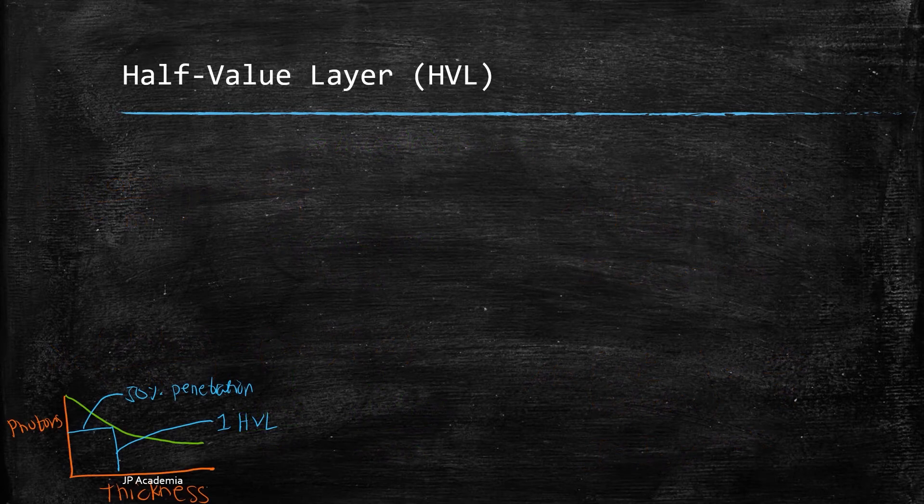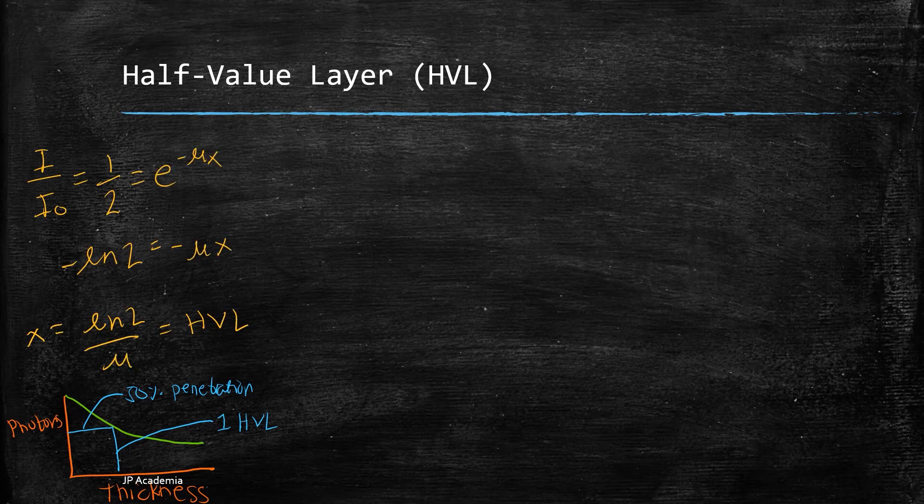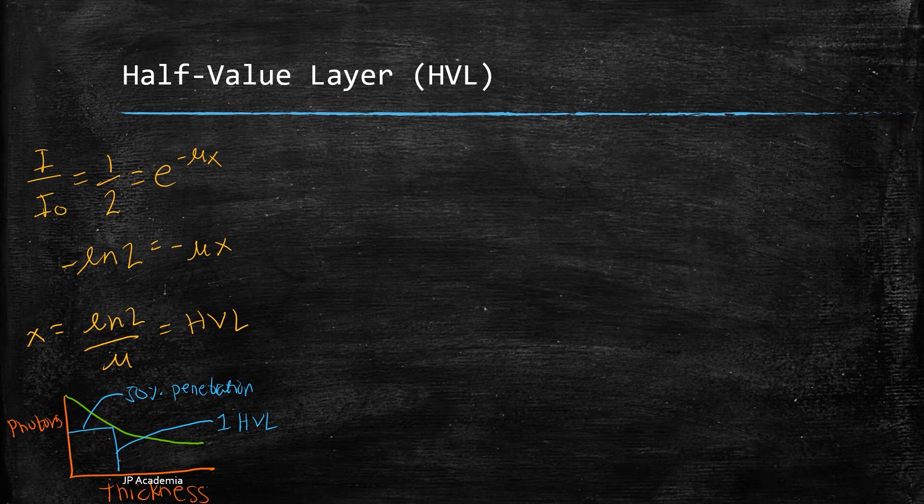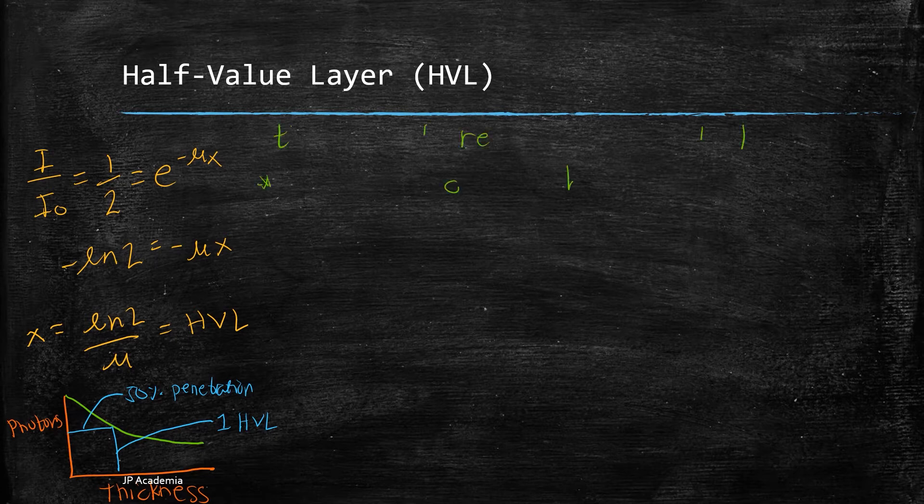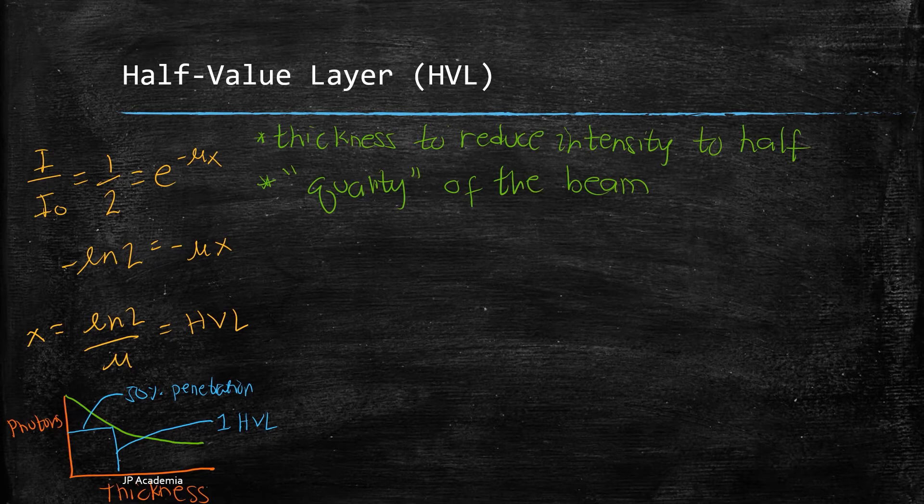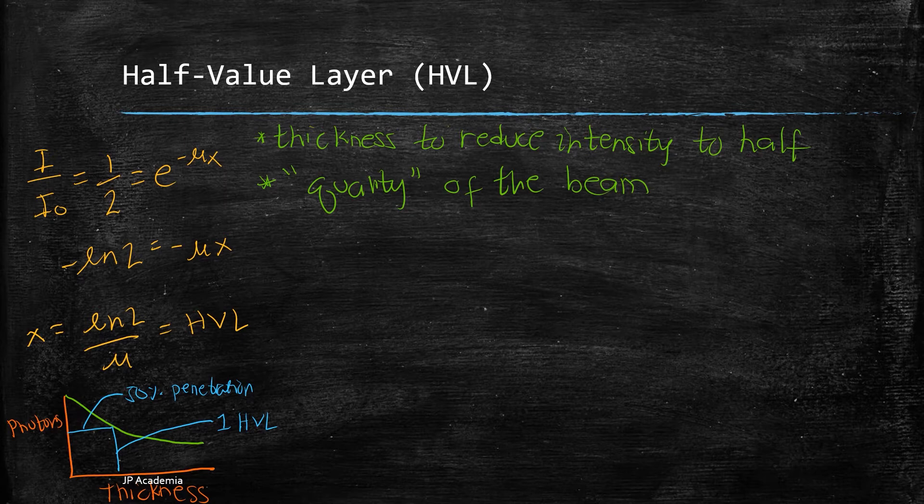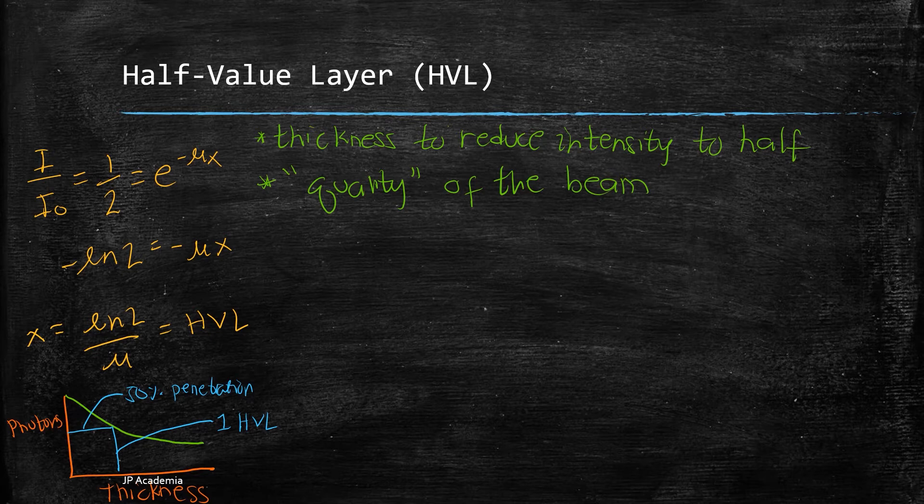Now I will define half value layer. This refers to the slab thickness required to reduce the intensity or the exposure rate of a photon to half and this is called again the half value layer or sometimes this is half value thickness or HVT. This mainly describes the beam quality or when we say quality here it is the penetrating power of the beam. What we have defined here is the first half value layer.